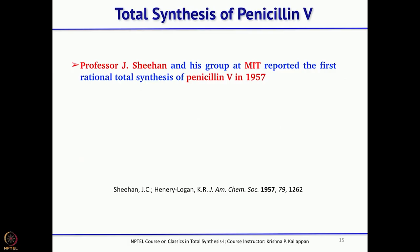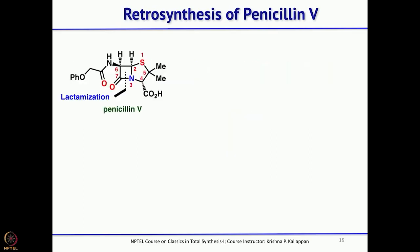Having discussed several methods for making beta-lactams, we now move to how penicillin was synthesized for the first time. Professor Sheehan from MIT and his group spent many years on the total synthesis of penicillin — starting from its isolation in 1920, their sustained efforts finally led to the first total synthesis in 1957.